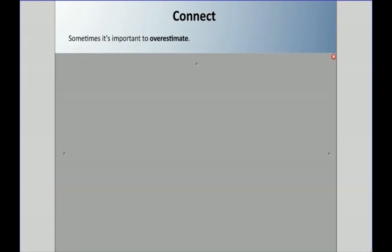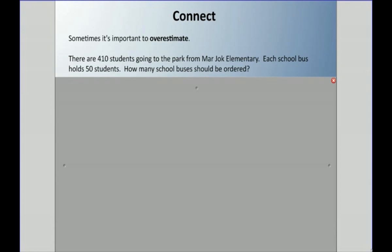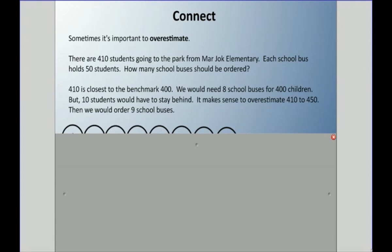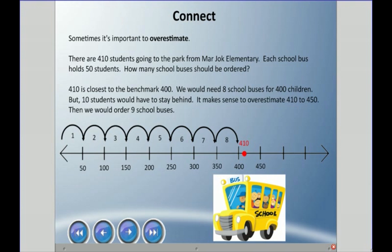Now, sometimes it's important to overestimate. Maybe your parents are like, don't be such a drama queen or drama boy, don't overestimate all the dishes you have to do. But sometimes it is important to overestimate, mom and dad. Let's say there's 410 students going to the park from Mar Jok Elementary. Each school bus holds 50 students. How many school buses should be ordered? 410 is closest to the benchmark 400. We would need 8 buses for 400 children, but that means 10 students will have to stay behind. Sorry, you don't get a seat. It makes sense in this situation to overestimate 410 to 450, and that way we get 9 buses, and those 10 poor students do get to go to the park. So yeah, there is times when we need to overestimate.